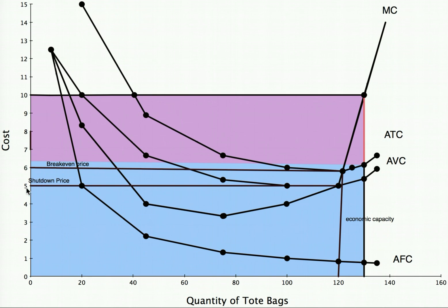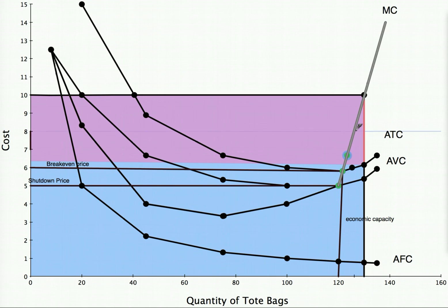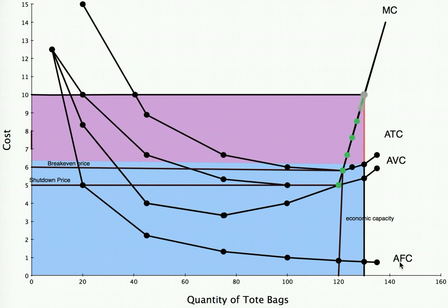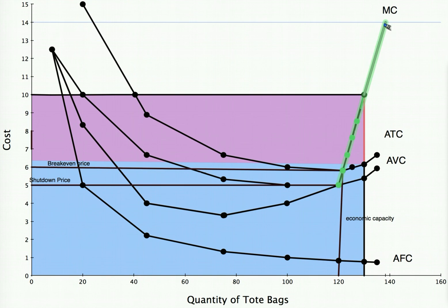At $5, the amount we are willing and able to produce is about 118 tote bags. At a price of $6, the amount we are willing and able to produce is about 120 tote bags. As the price goes up, the amount we are willing and able to sell increases as well. This relationship between price and the amount we are willing and able to sell is the supply curve. In fact, our supply curve is the marginal cost curve above the shutdown price.